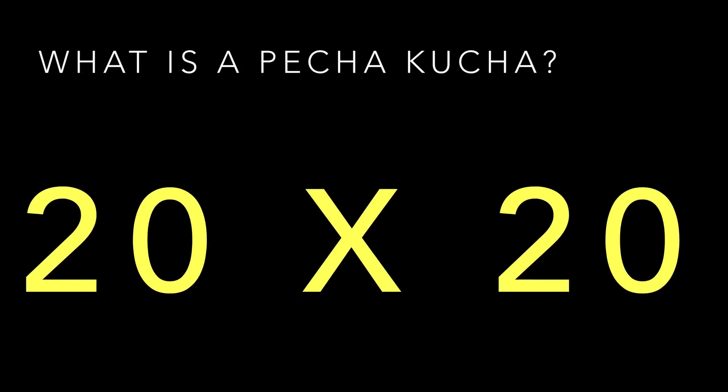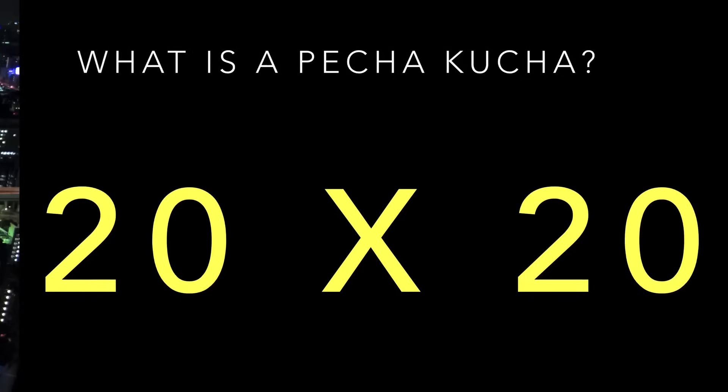Put simply, a Pecha Kucha is a slideshow with a very strict length. Each Pecha Kucha is exactly 20 slides, each of which stays on the screen for exactly 20 seconds before advancing automatically. It's meant to be a format that forces the presenter to get to the point and not linger on long, boring slides.